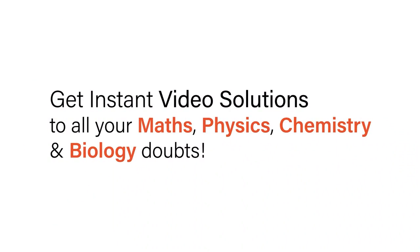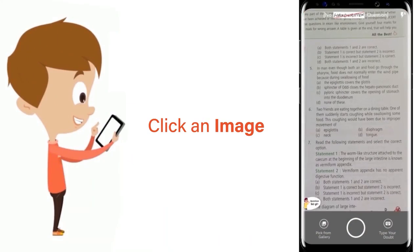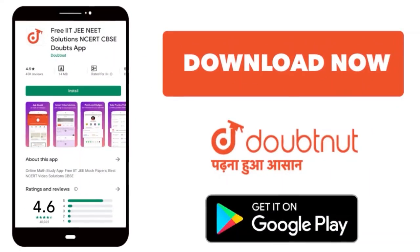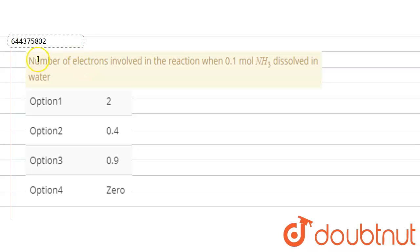With Doubtnet, get instant video solutions to all your maths, physics, chemistry, and biology doubts. Just click the image of the question, crop the question, and get instant video solution. Download Doubtnet app today. Our question is: number of electrons involved in the reaction when 0.1 mole NH3 dissolved in water.